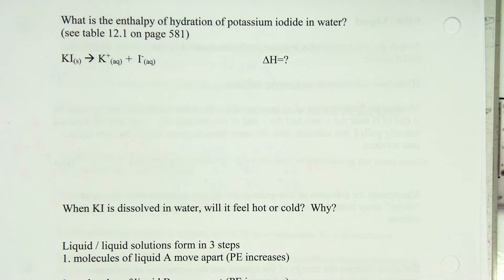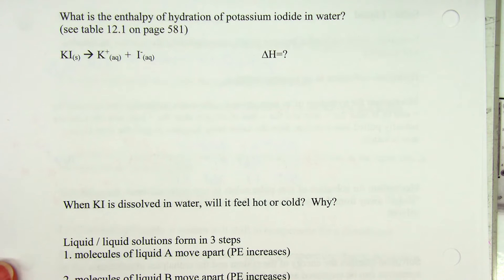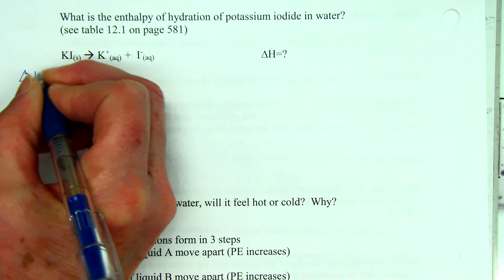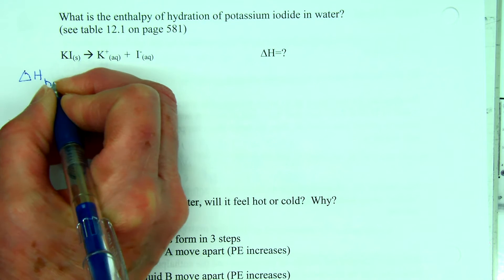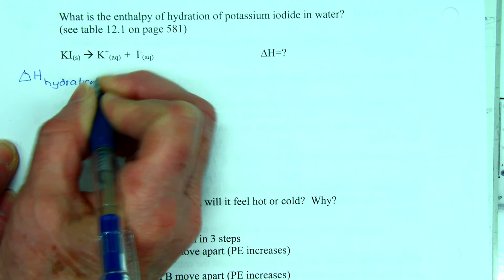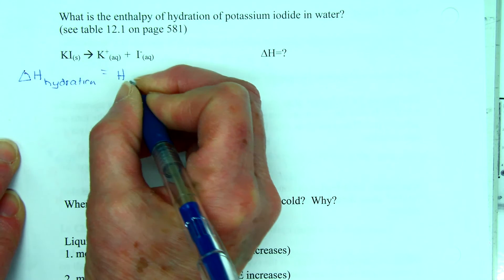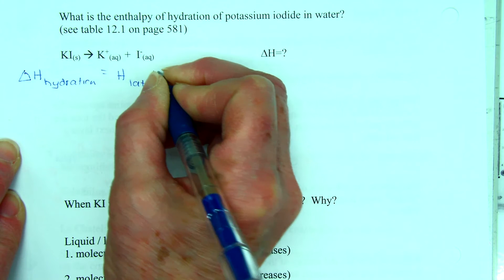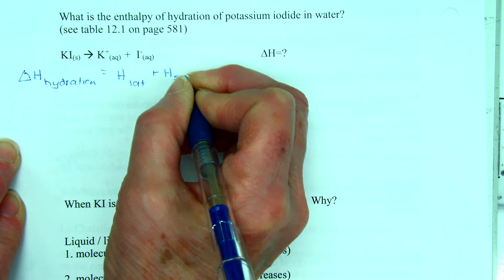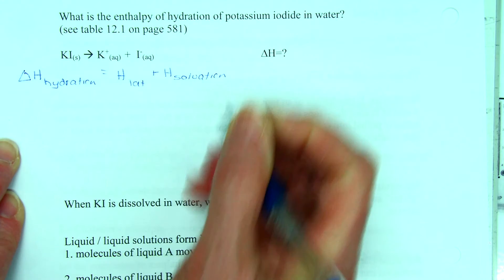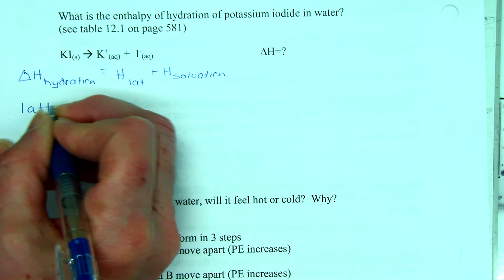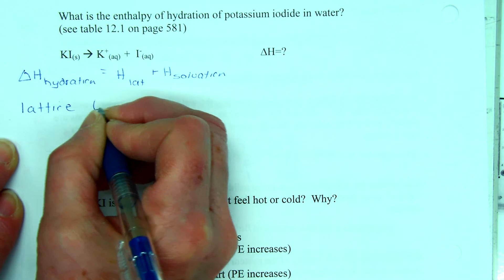So let's look at this: what's the enthalpy of hydration of potassium iodide? Well, you have to go look up some information in the book, and I've already done that. We know that the enthalpy of solution or hydration is equal to the lattice energy plus the energy of salvation.